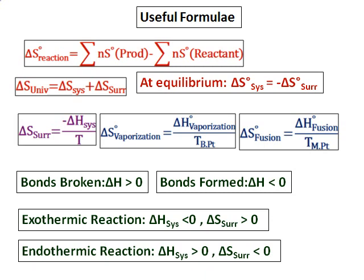As we have learned, delta H is positive if bonds are broken and negative when bonds are formed. For an exothermic reaction, delta H system is negative and delta S surrounding is greater than zero. For an endothermic reaction, delta S system is positive and delta S surrounding is less than zero — that is, delta H is positive and entropy of the surrounding is negative.